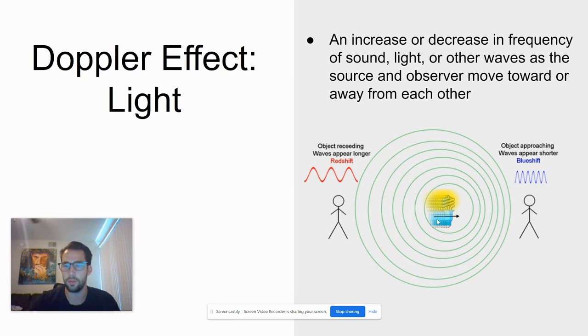What happens is the same idea. If I have an object emitting light and it's moving towards me, it's going to show as a shorter frequency wave. Light and colors all have different frequencies, so a shorter frequency of light is actually going to be more blue.